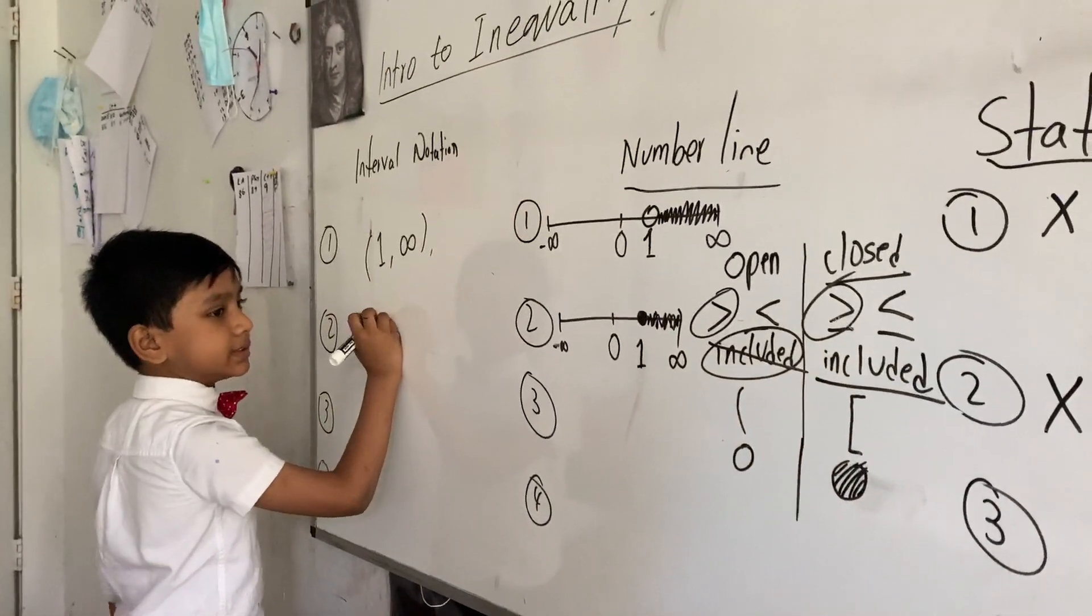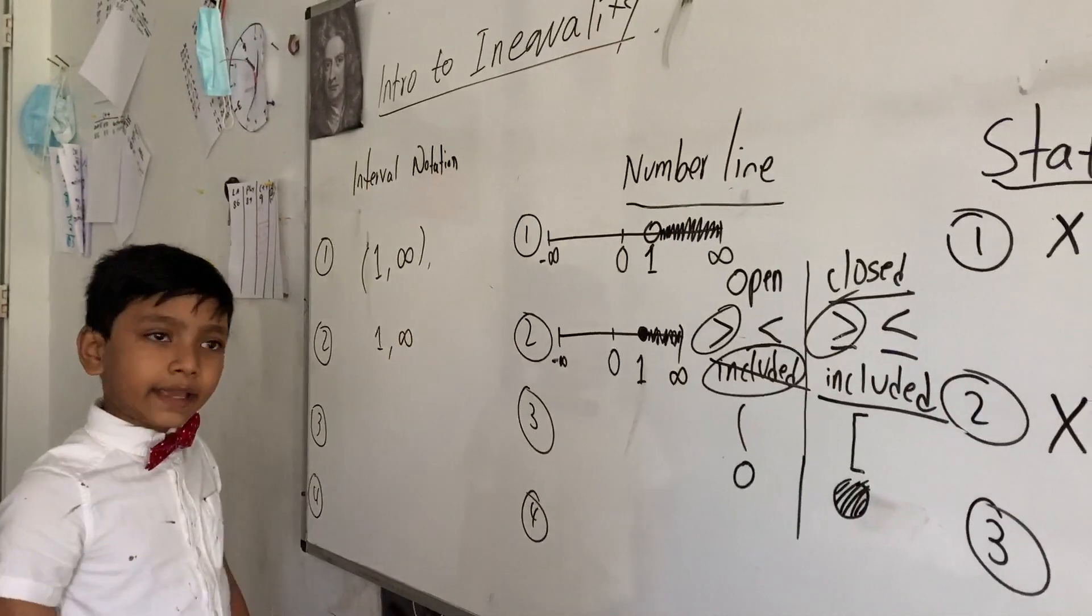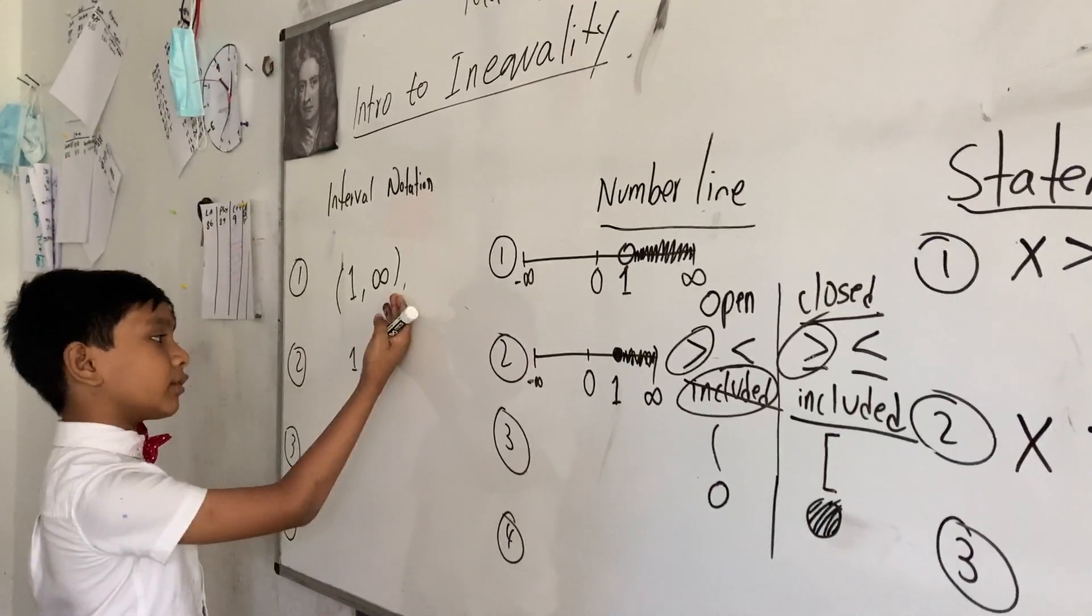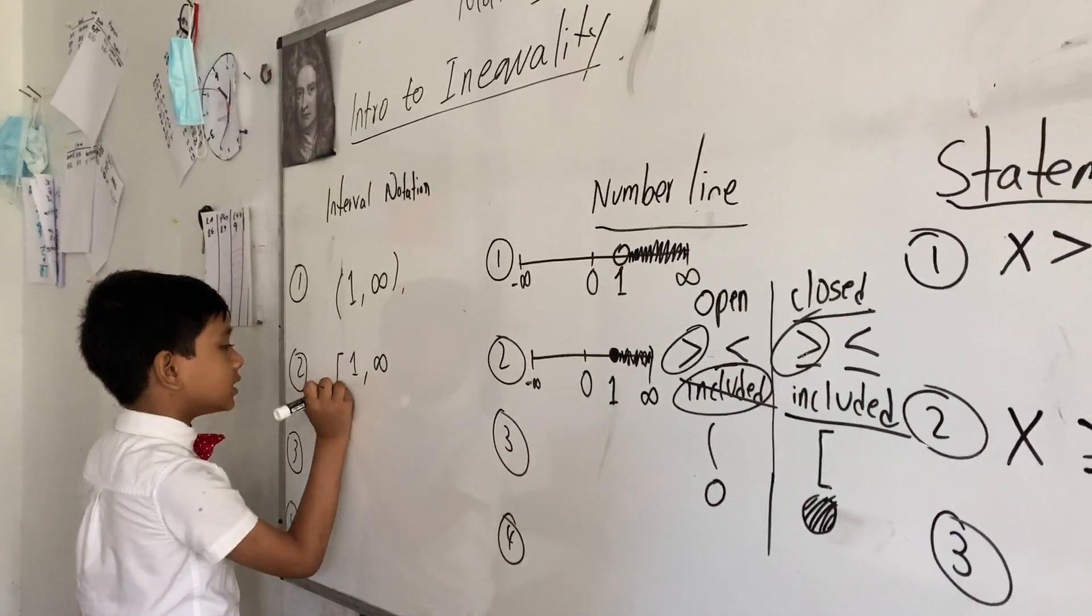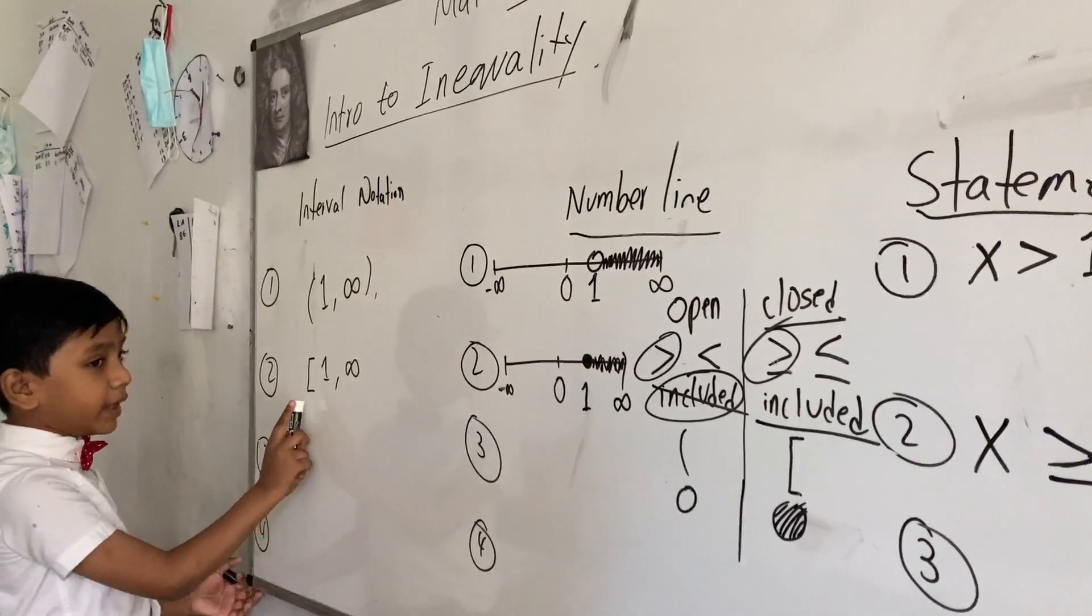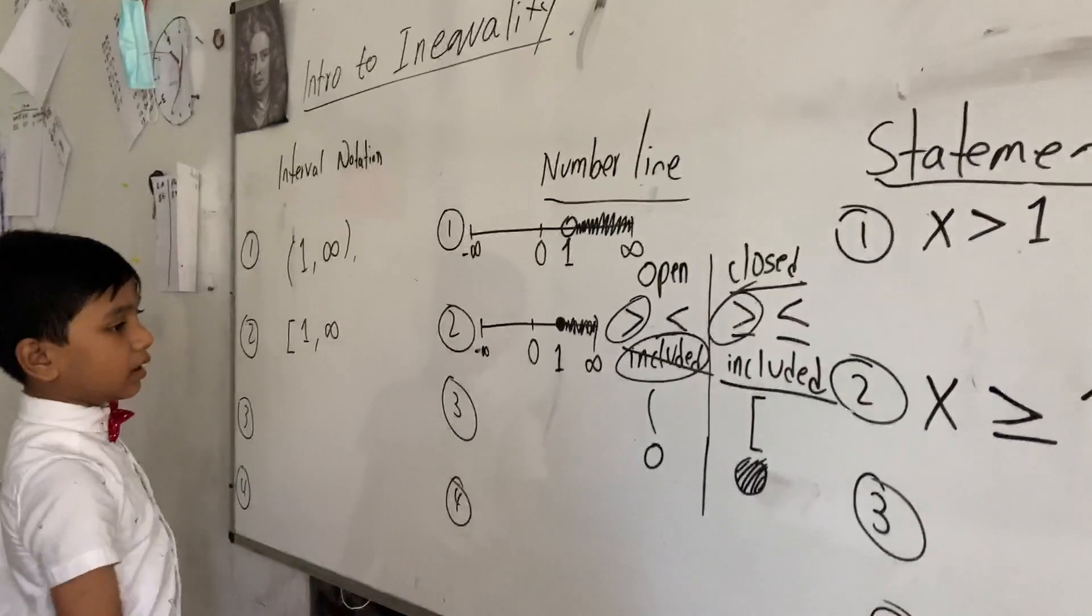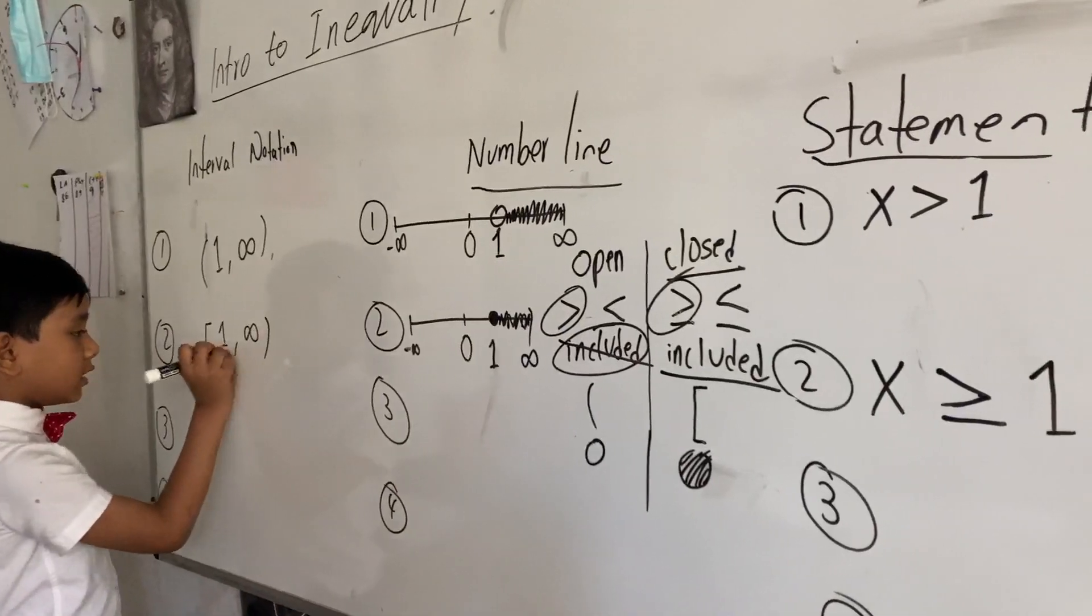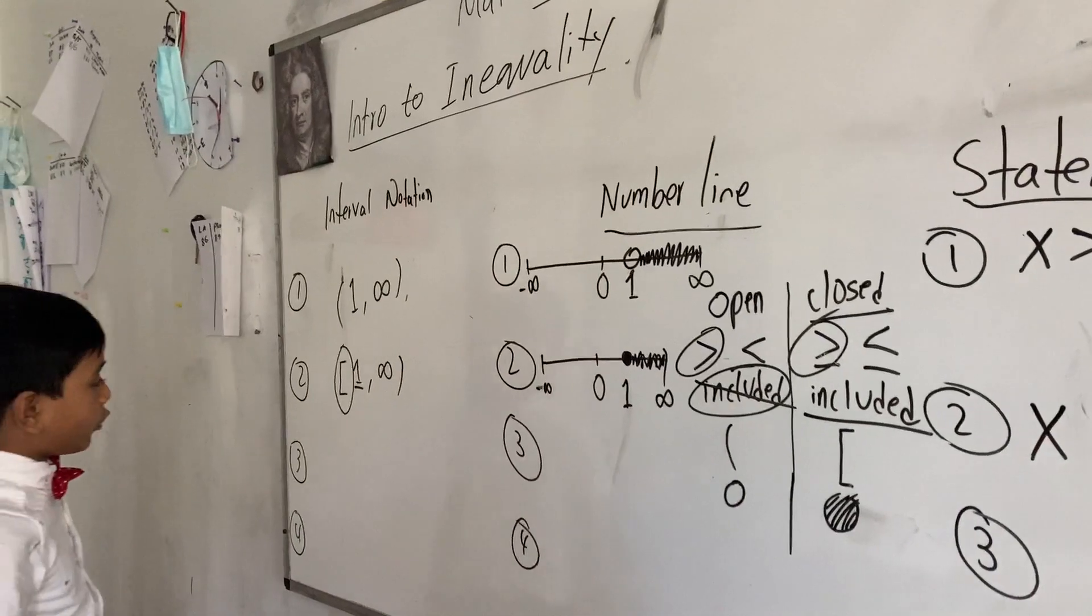So now how we can write this is still one comma infinity. Now you may be asking, how do we differentiate this interval notation from the previous interval notation? Well, what you can do is, in order to differentiate, you must put a square bracket in front, behind one of the closed circles, one of the numbers with a closed circle on. So for example, this 1 needs to add this kind of bracket before it.